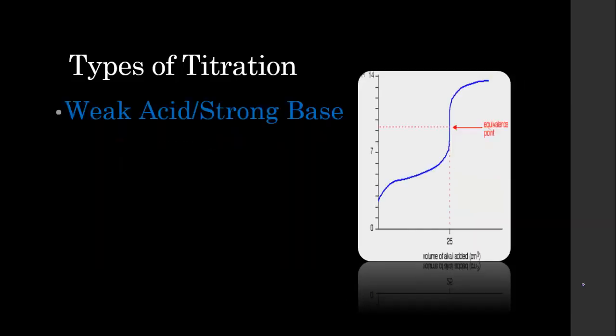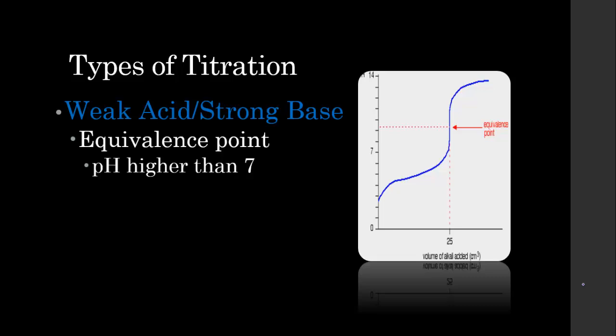If we go the other way, if we have a weak acid and mix it with a strong base, we're going to see a similar thing happen. But this time the pH is going to be more in the base range because the base has that stronger number. So instead of being truly in the middle, it's going to be a little bit higher than neutral.